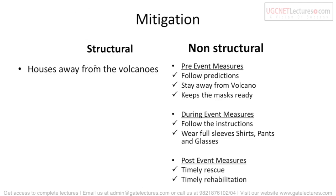Now for volcano mitigations. In structural mitigation, houses should be built away from volcanoes — kept at enough distance so that if a volcano suddenly ruptures, you have time to evacuate. For non-structural pre-event mitigation, follow predictions — scientific research is continuously done on volcanoes to know when they might become active, so you must follow those predictions. Stay away from the main volcano region entirely. Keep masks ready, because when a volcano erupts, along with ashes and lava, many dangerous gases are also released that can be very harmful to us.